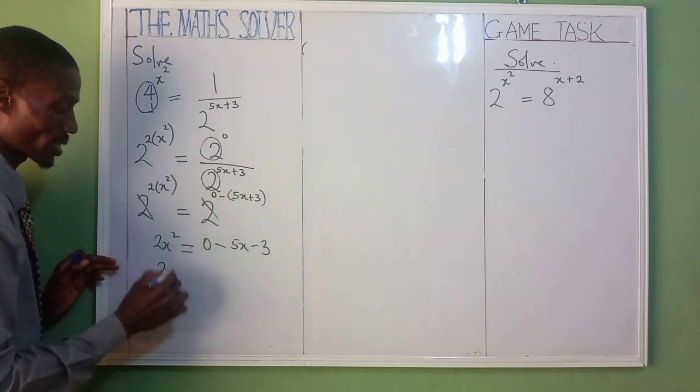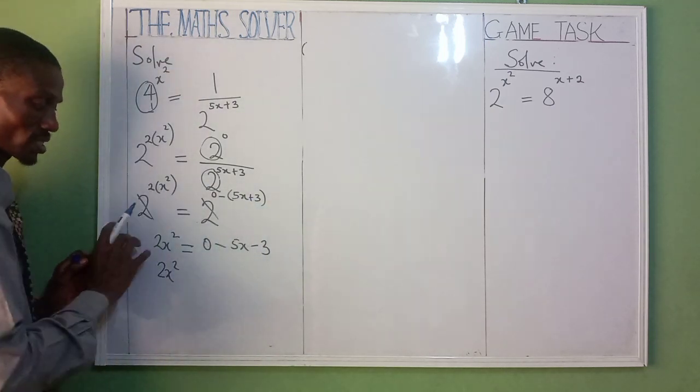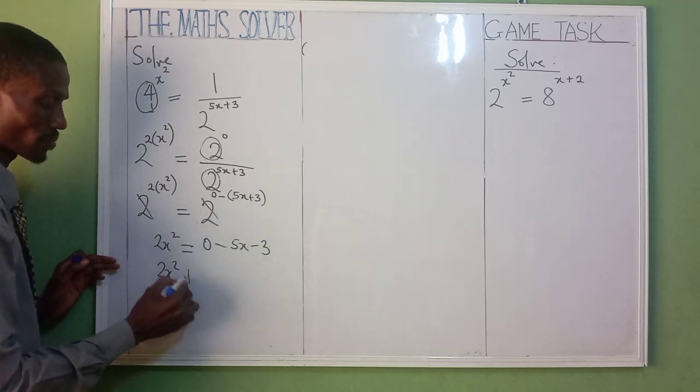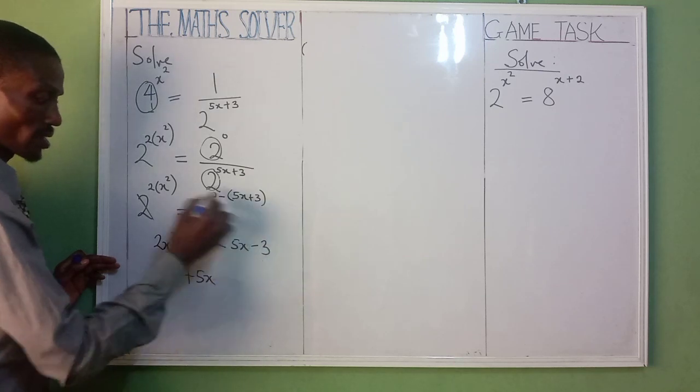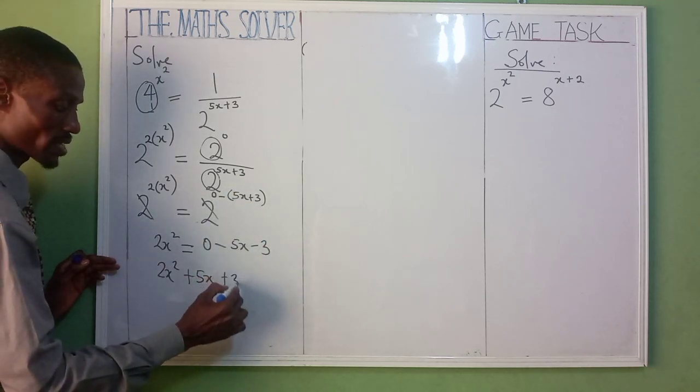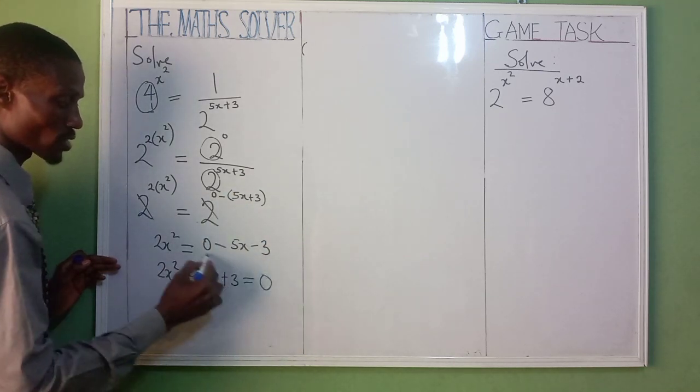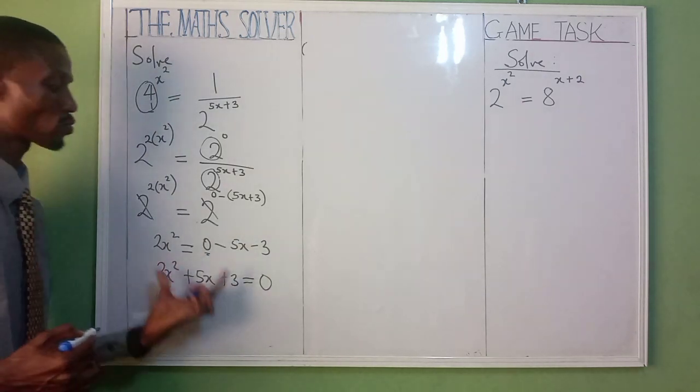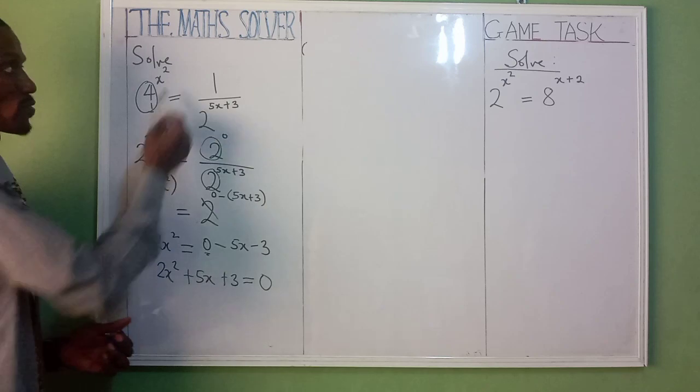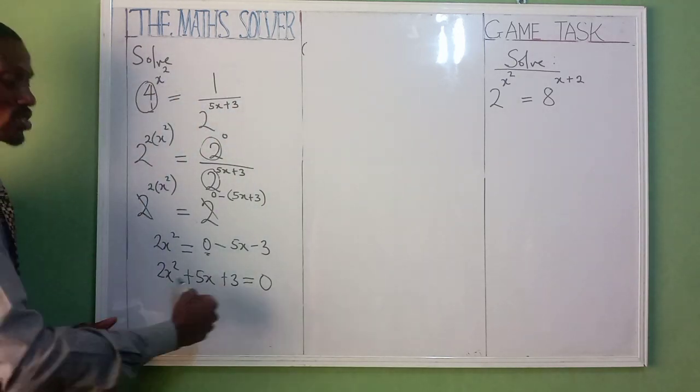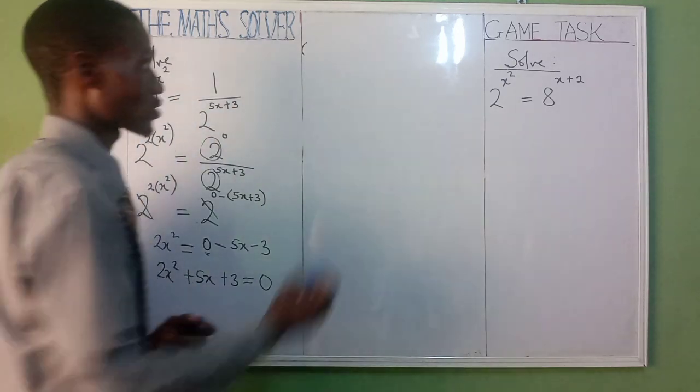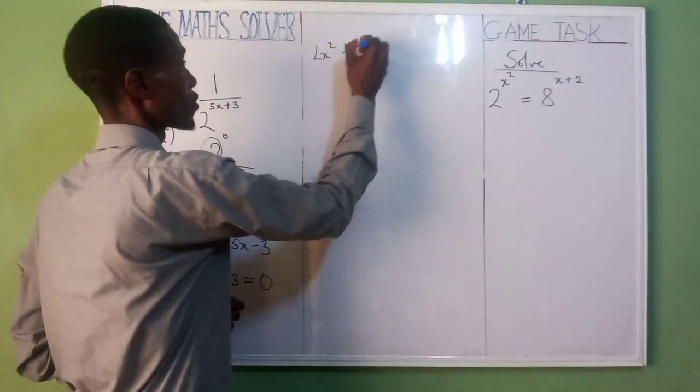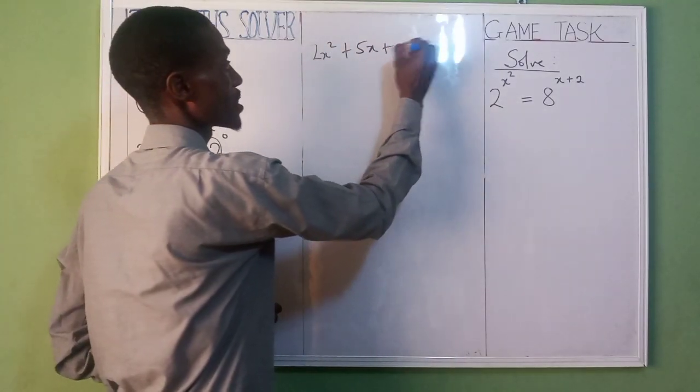So you have 2x squared. Let's collect everything to the other side. This is minus 5x, by the time it comes it's going to be plus 5x. This is minus 3, by the time it comes it's going to be plus 3, equal to 0. As you can see, we are now having quadratic equation. Don't forget from your indices, this is your quadratic equation.